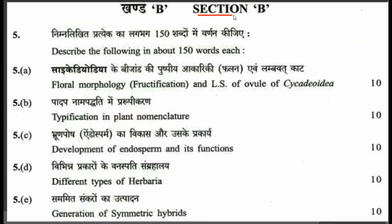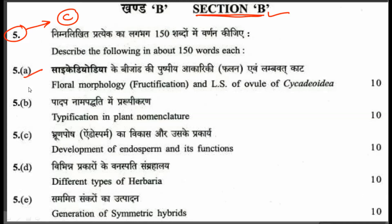This is question number 5, which is the start of section B. Question number 5 is a compulsory question, divided into five sub-questions: A, B, C, D, and E. You have to describe the following in 150 words each. The first sub-question is floral morphology and the role of sepals in Psycidiody.